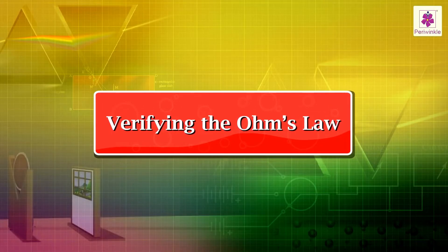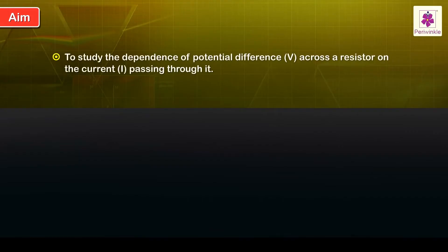Verifying the Ohm's Law. Aim: To study the dependence of potential difference V across a resistor on the current I passing through it, to determine its resistance, and to plot a graph between V and I.